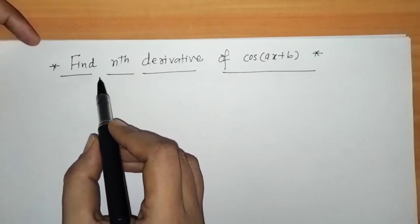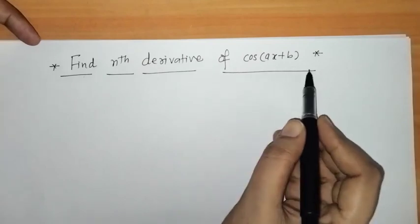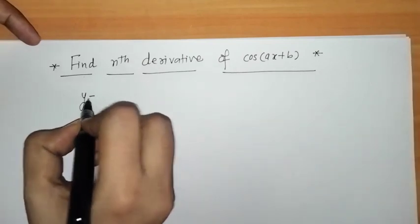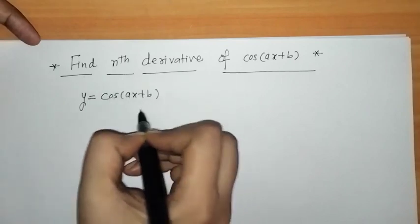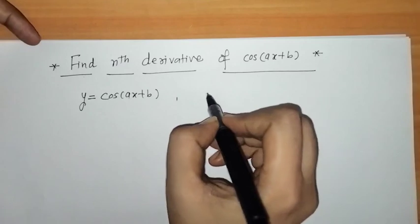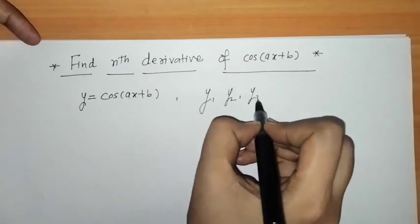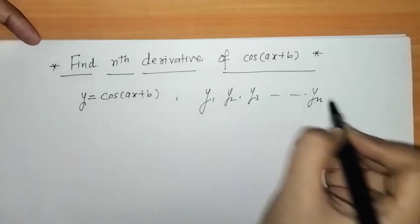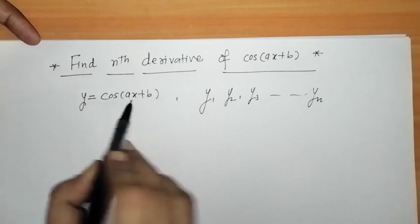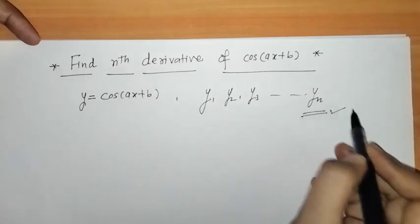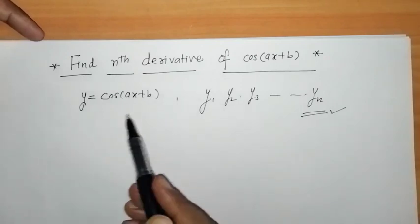Hello everyone, welcome to Unlock Maths. Today we have to find the nth derivative of cos(ax + b). Here we write y = cos(ax + b), where a and b are constants, and we have to find derivatives y1, y2, y3 up to yn. We have to differentiate y with respect to x so that we get the nth derivative yn. This differentiation is called successive differentiation.